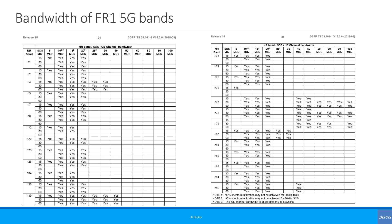This is from the 3GPP specs showing bandwidth supported for different FR1 5G bands. As you can see, it can go from 5 MHz minimum to 100 MHz maximum. Not all bands support all bandwidths. One of the most popular bands, known as Band 3 or the 1800 MHz band, is now known as N3 in 5G, and it supports bandwidths of 5, 10, 15, 20, 25, and 30 MHz.